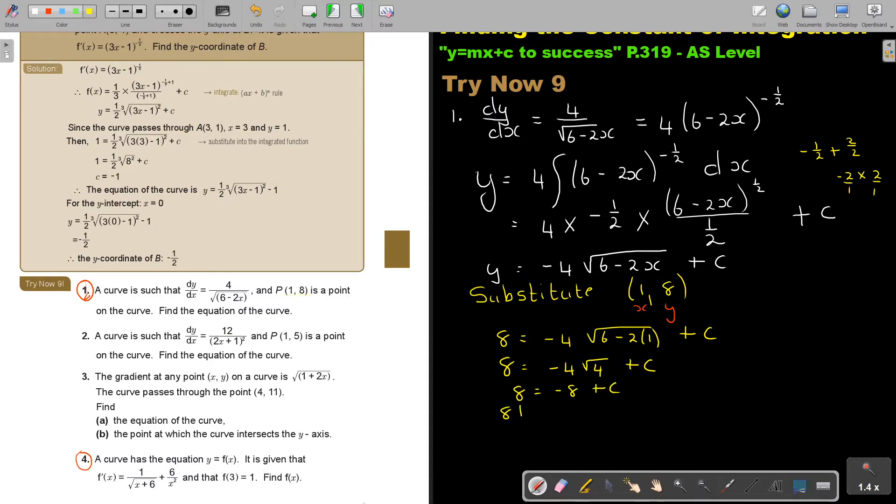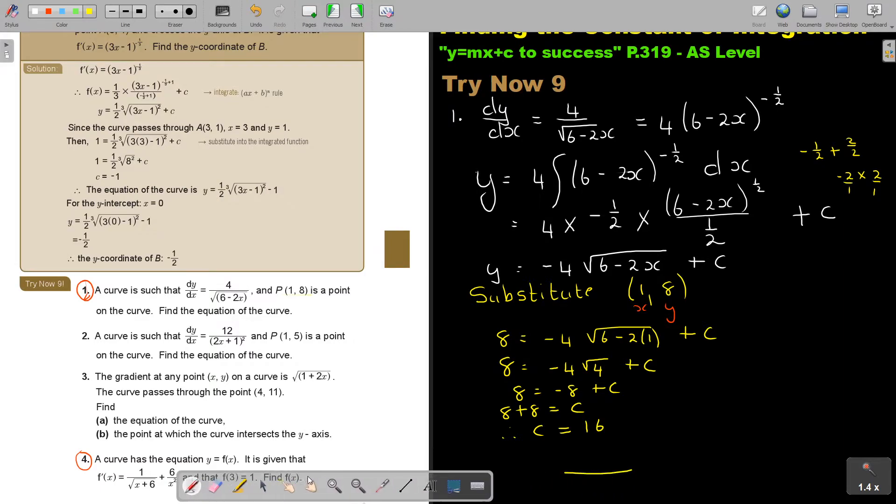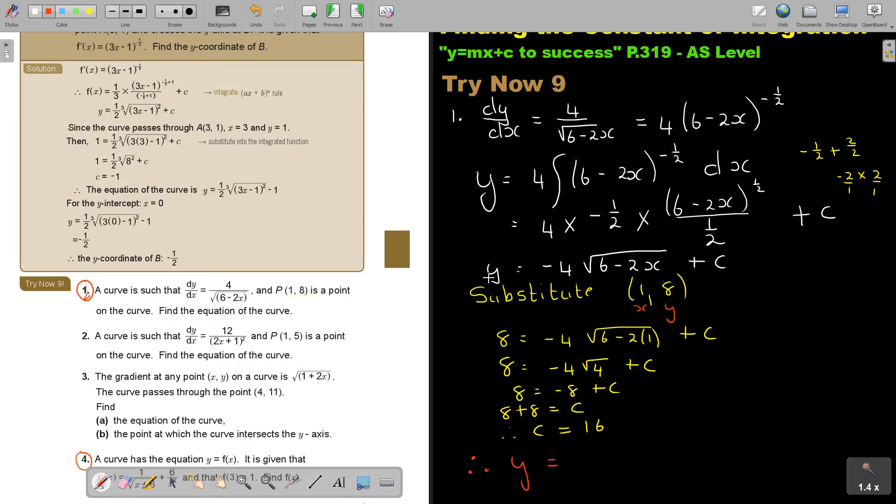Plus C. And if it's going over, it's going to be 8 plus 8 is equal to C. So therefore, C will be what? 16. If I just want to move this. And now, I stop with my final by saying, therefore, Y is equal to... And remember, I'm substituting in there. So it's negative 4 and then that 6 minus 2X plus 16. And that will be my original function before it was differentiated.